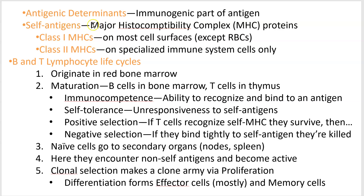Our self antigens — the recognizable chemical signatures on our cells — are called major histocompatibility complex proteins, or MHC proteins. There are two classes. Class I MHC proteins are found on almost all your cells: skin, liver, brain, muscle, bone — red blood cells are the exception. Class II MHC proteins are found only on immune system cells that use them to alert the rest of your immune system.